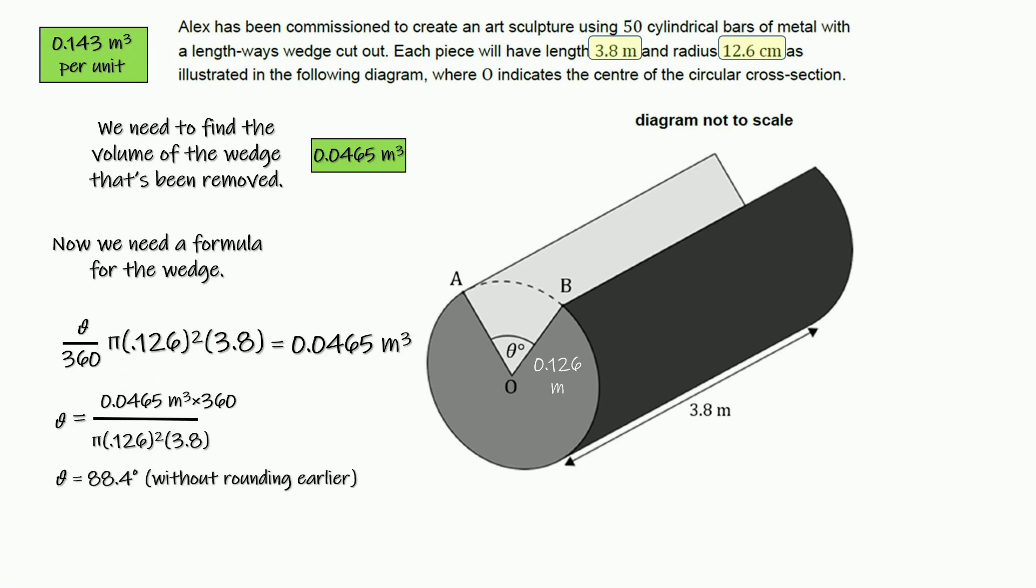88.4 degrees. That's without rounding earlier, or depending on how you use your calculator, you could round correctly and still get 88.3. So it depends on how clean you are with your calculator. Most likely, both of those answers for this question would be awarded full credit as long as work was shown.